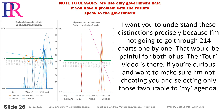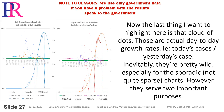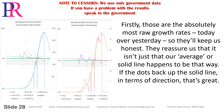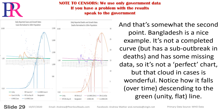I want you to understand these distinctions precisely because I'm not going to go through 214 charts one by one — that would be painful for both of us. The tour video is there if you're curious and want to make sure I'm not cheating you and selecting only those favourable to my agenda. Now, the last thing I want to highlight here is that cloud of dots. Those are actual day-to-day growth rates, i.e. today's cases over yesterday's cases. They're pretty wild, especially for the sporadic, not quite sparse charts. However, they serve two important purposes. Firstly, those are the absolutely most raw growth rates — today over yesterday — so they'll keep us honest. They reassure us that it isn't just that our average or solid line happens to be that way. If the dots back up the solid line in terms of direction, that's great.